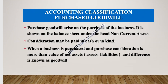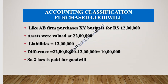Purchased goodwill is when we purchase a business and pay for the goodwill — in cash or partly in cash — and we show it in the balance sheet. When we purchase a business, if we have paid more than the value of net assets, the difference is known as goodwill. For example, if the net value of assets is 8 lakhs but we paid 10 lakhs, the difference of 2 lakhs is goodwill. For instance, if firm AB purchases XY business for 12 lakhs, with assets valued at 22 lakhs and liabilities at 12 lakhs, the net assets are 10 lakhs. Since AB paid 12 lakhs, the goodwill is 2 lakhs.